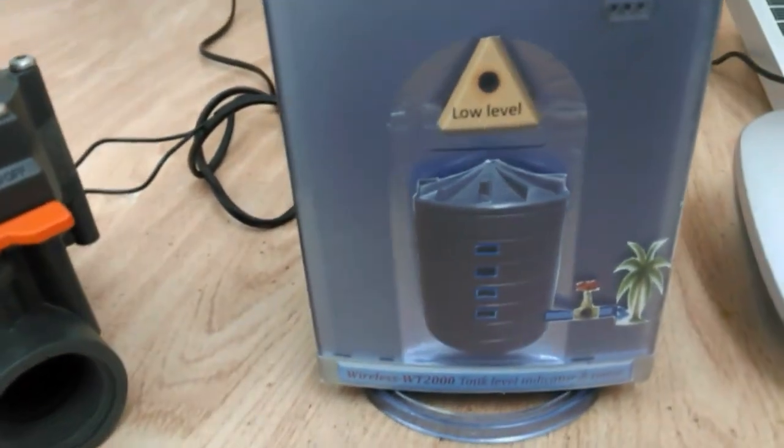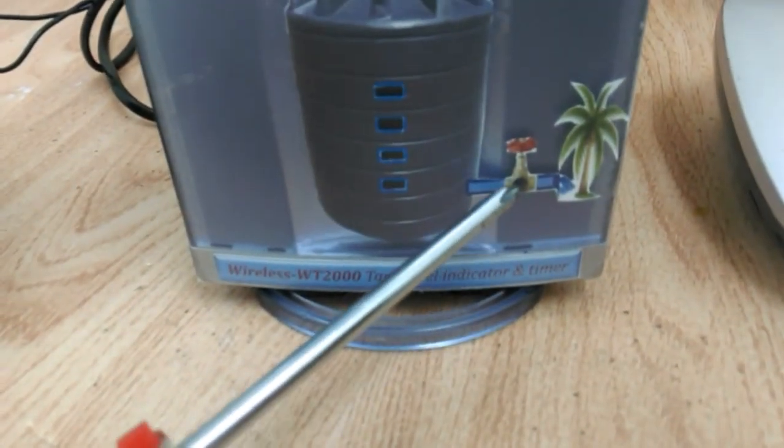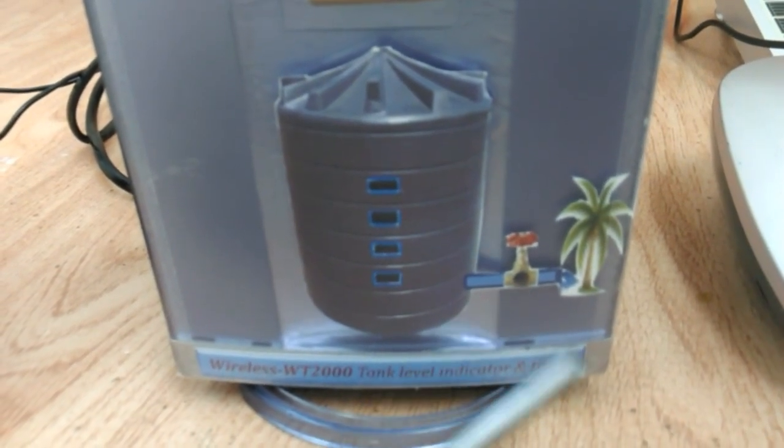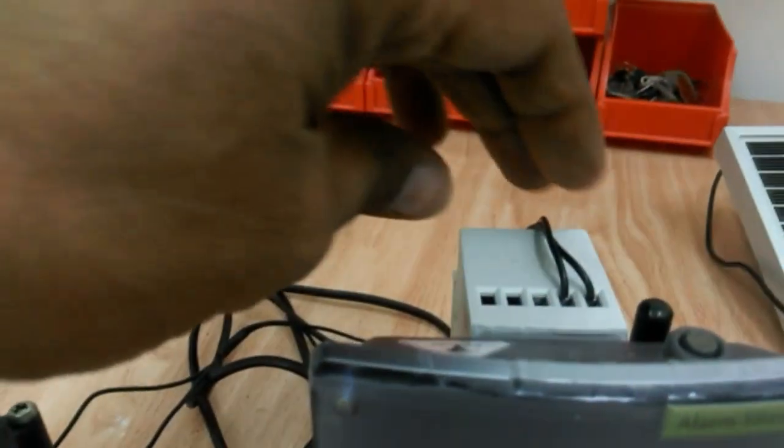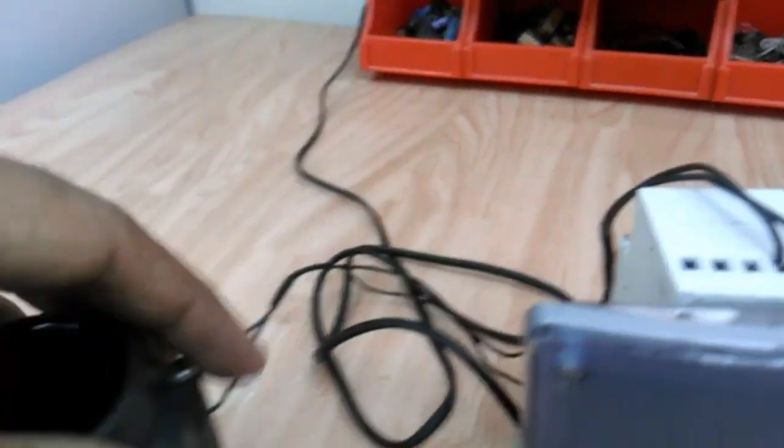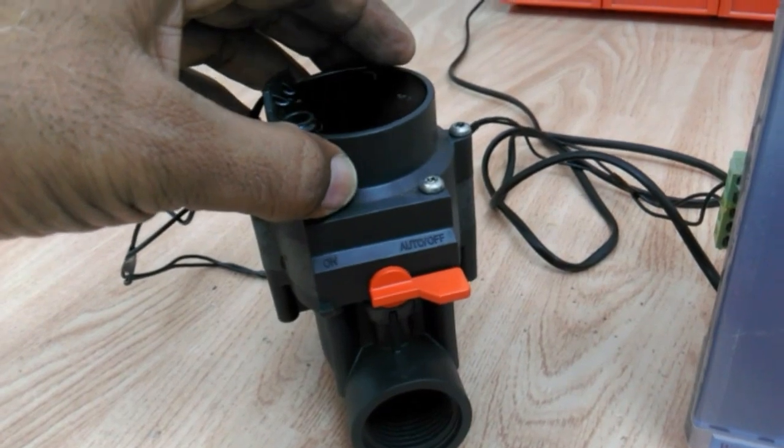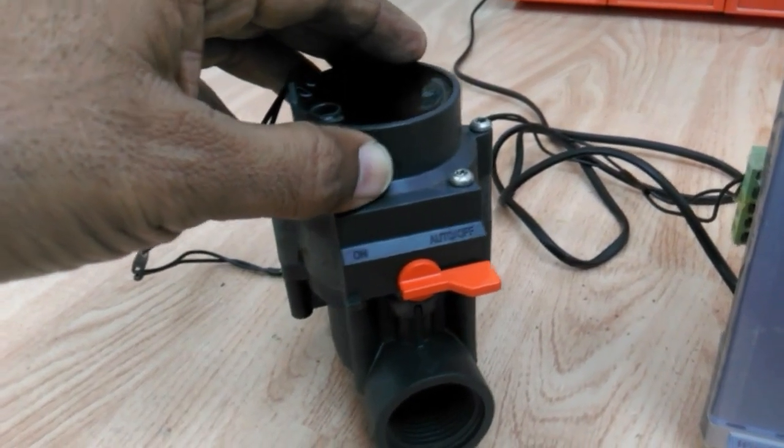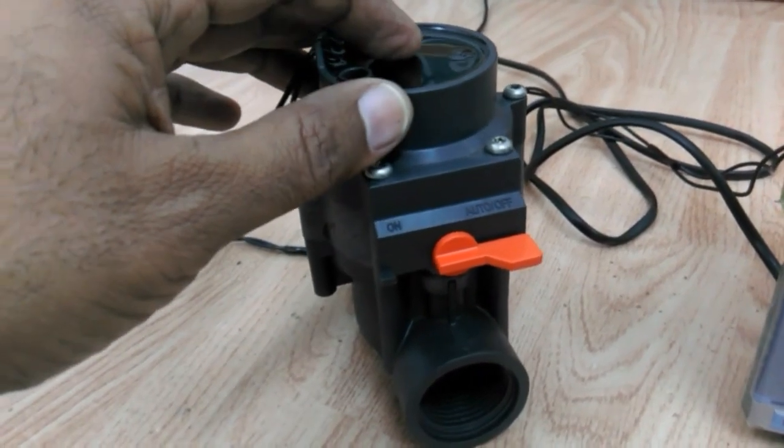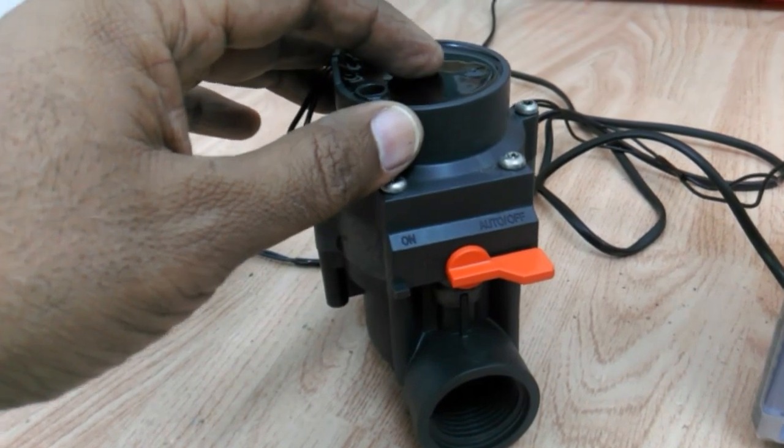The irrigation command from the timer is displayed here. This is the status of the output going to the solenoid valve to open or close the water. In my case, I use a solenoid valve, but it can be anything else like a water pump if required.